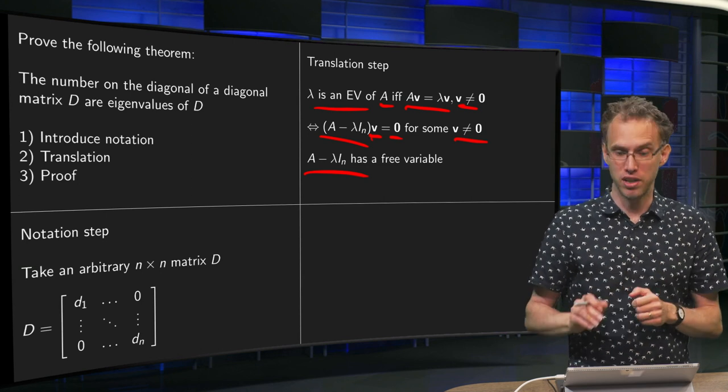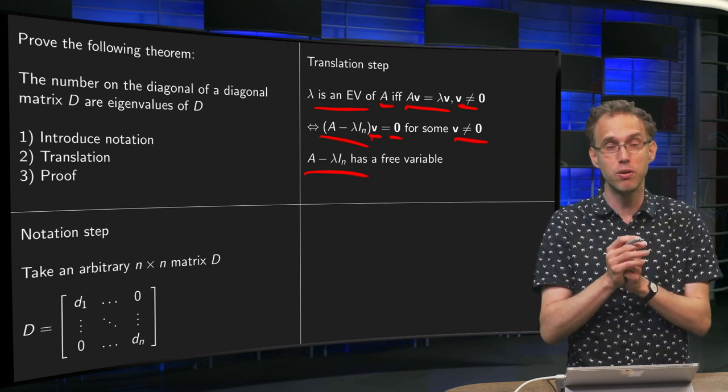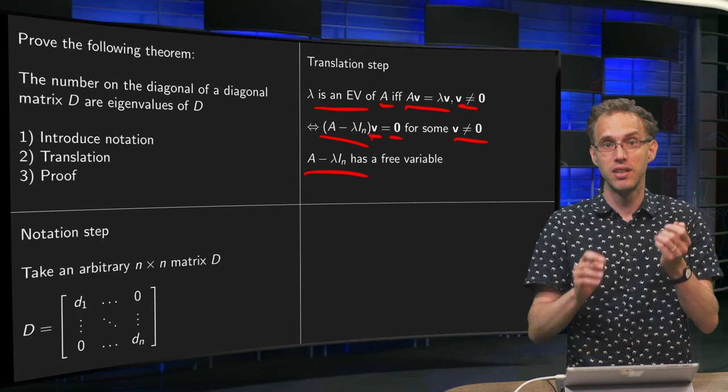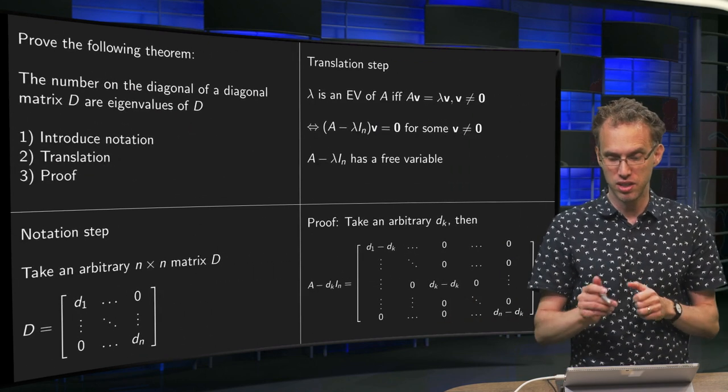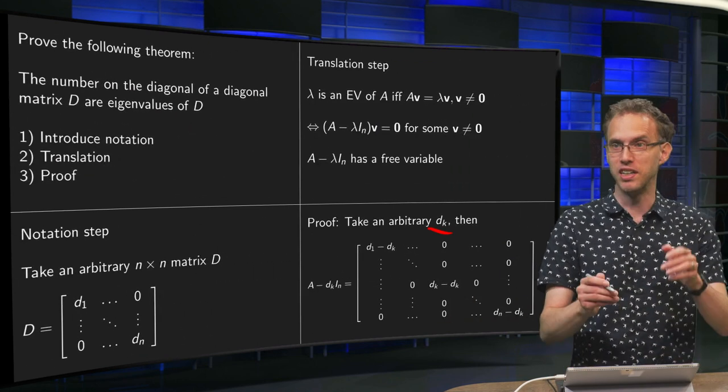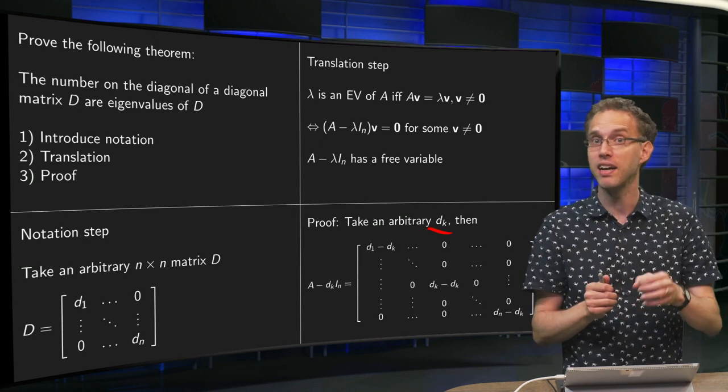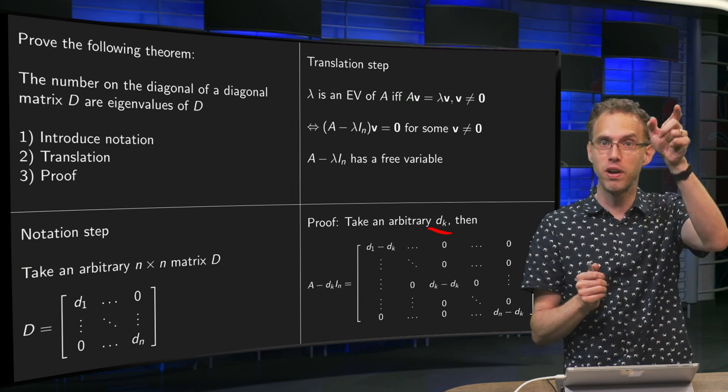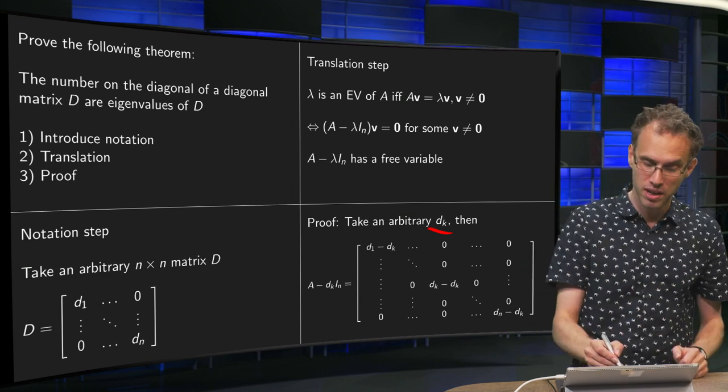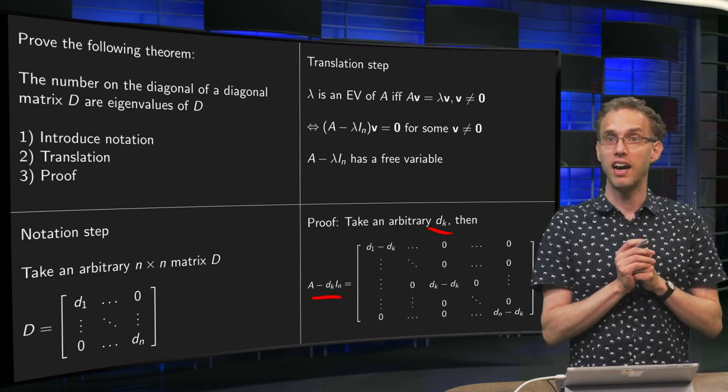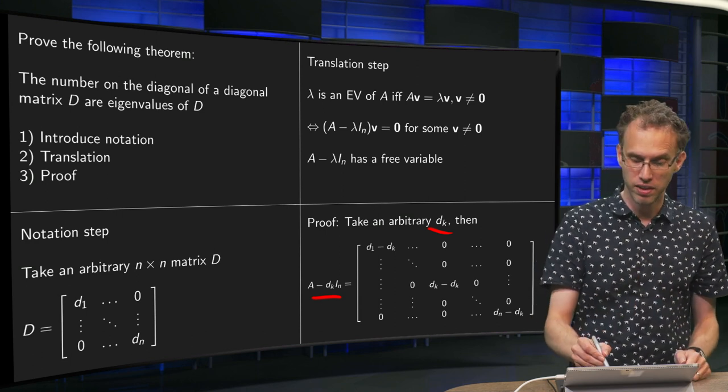Then the proof is rather straightforward. Just compute D minus this dₖ times Iₙ. We take an arbitrary dₖ. You have your numbers on your diagonal, just pick one, whatever you like. Let's take dₖ somewhere. And then we compute A minus dₖ times Iₙ. What do we get? We get a mess here.